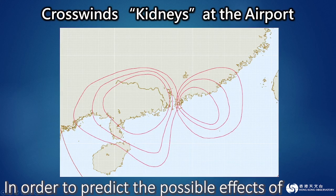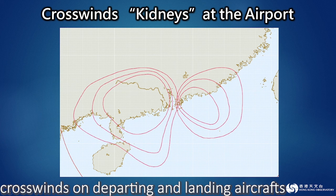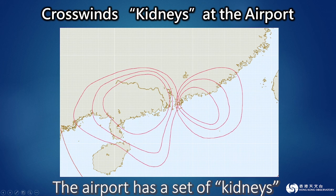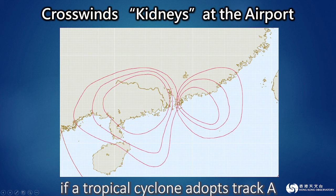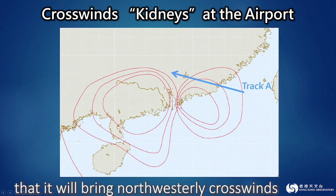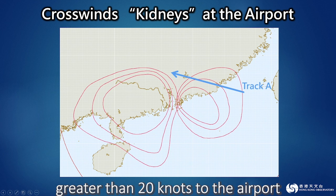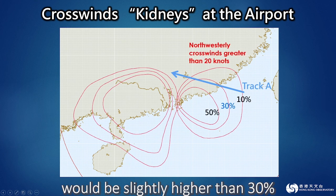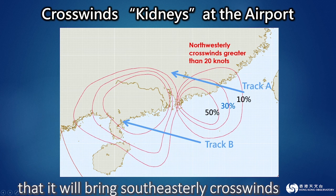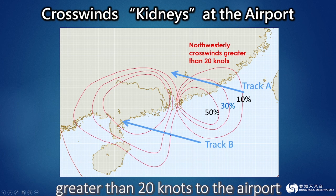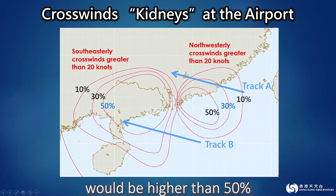In order to predict the possible effects of crosswinds on departing and landing aircraft, the airport has a set of kidneys to deal with the crosswinds. For instance, if a tropical cyclone adopts track A, the probability that it will bring north-westerly crosswinds greater than 20 knots to the airport would be slightly higher than 30%. For a tropical cyclone adopting track B, the probability that it will bring south-easterly crosswinds greater than 20 knots to the airport would be higher than 50%.